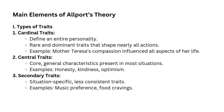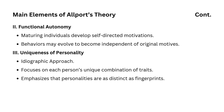Secondary traits are more situation-specific and not as consistent as cardinal or central traits. They might only appear in certain contexts or under particular conditions. For example, a person might have a preference for certain types of music or specific food cravings. These traits don't necessarily reflect their core personality, but still contribute to their uniqueness.